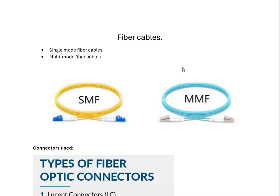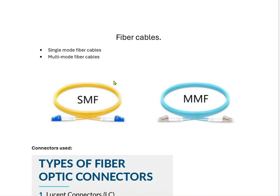Mainly there are two types of fiber cables: single mode fiber cable and multi mode fiber cable. Single mode fiber cable normally comes in yellow color and multi mode fiber cable comes in aqua color. Multi mode fiber comes in different colors, which we will discuss in the later part of the video.